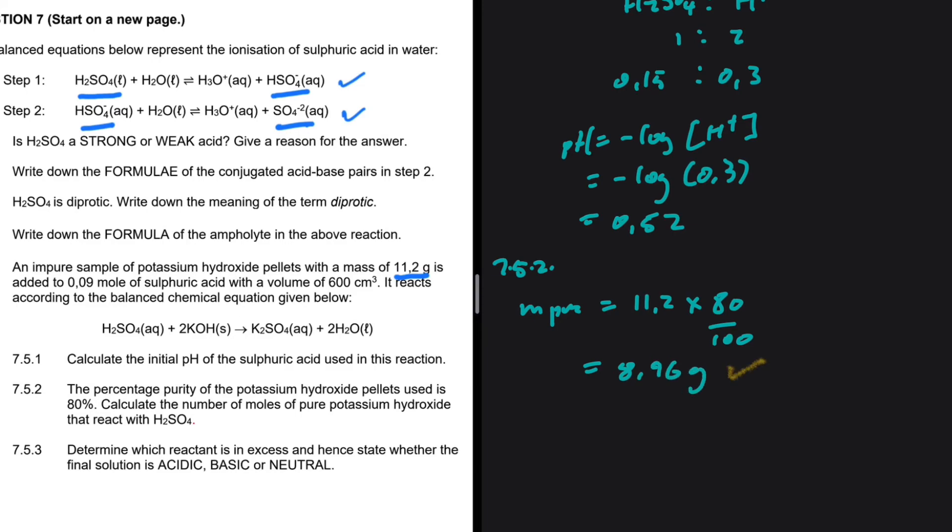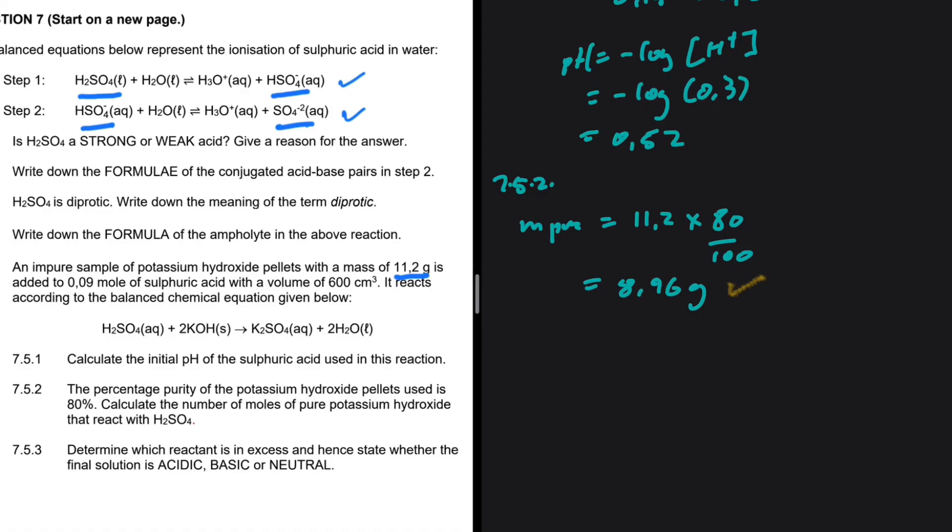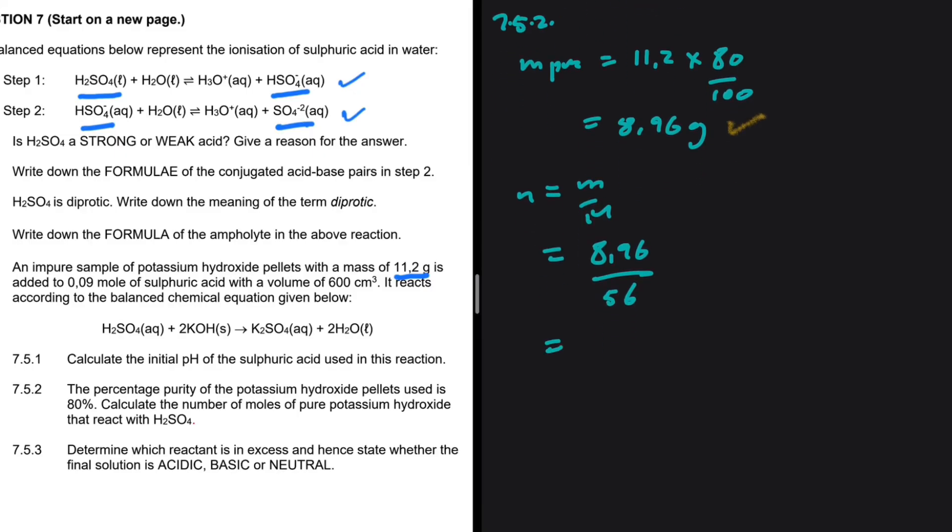So this is the mass of the pure potassium hydroxide. With this mass, we can then find the number of moles. The mass is 8.96. The molar mass of potassium hydroxide is 56. And if you put that in your calculator, you shall get 0.16 moles. So these are the number of moles of potassium hydroxide that react with H2SO4.